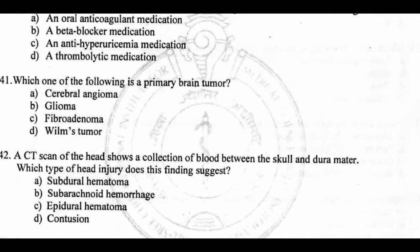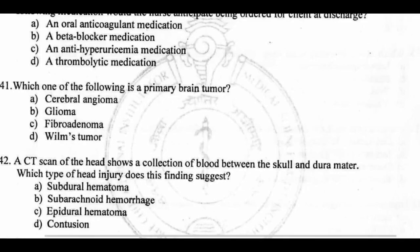Question 41: Which of the following is a primary brain tumor? Options: cerebral angioma, glioma, fibroadenoma, Wilms tumor. The answer is glioma, which is a primary brain tumor.